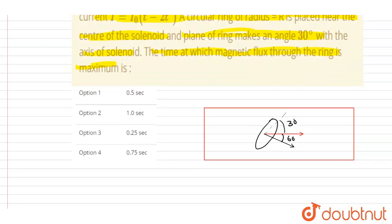So we want to find at which time the flux will be maximum. And we know that the flux is B·A, so I will write it as B A cos θ.